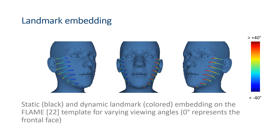The 3D landmarks on the predicted mesh are projected into 2D to compute the landmark loss. A correct 3D face shape will project to the correct 2D landmarks in different views. Note that 2D landmarks are only used during training. During inference, we do not use landmarks. RingNet infers the FLAME parameters directly from image pixels.